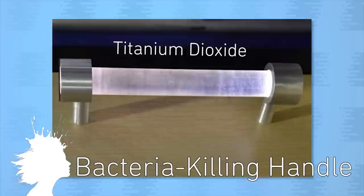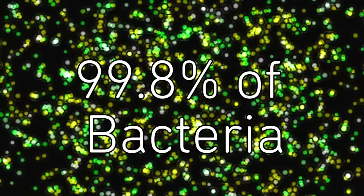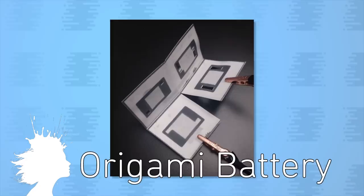Teenagers in Hong Kong have invented a door handle coated with titanium dioxide that when activated by LED light kills 99.8% of all bacteria. And engineers at Binghamton have invented a bacteria-powered paper battery that folds like origami and costs 5 cents.